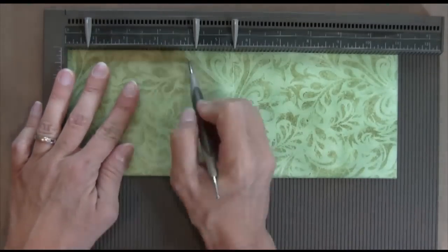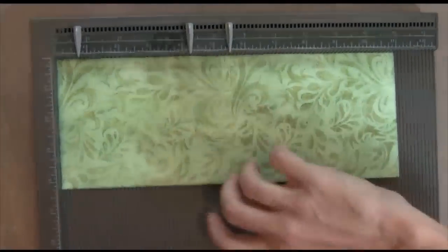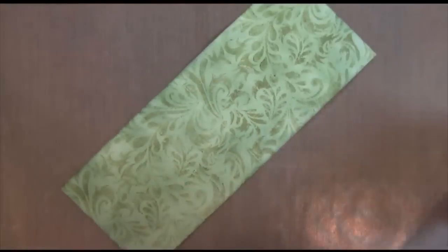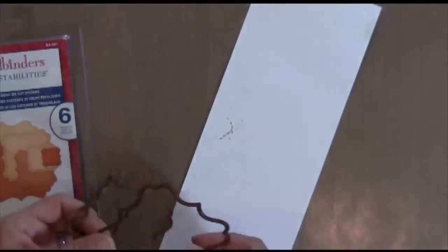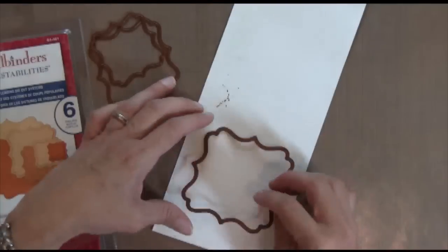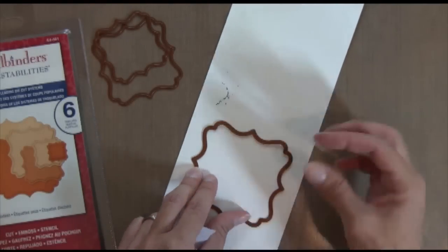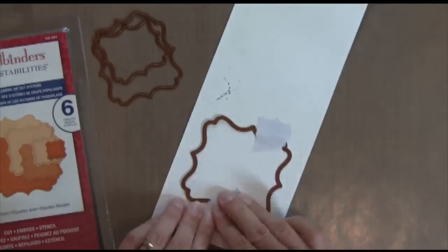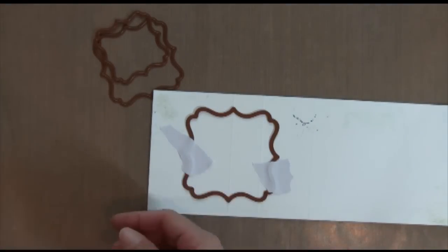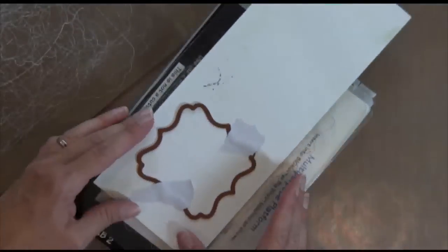Alright, so now I've got my scoreboard, and I'm going to score it at 2 3⁄4 and 3 3⁄4, and I'm going to take three different layers of these Spellbinder dies, I'm going to flip it over, and I'm going to center it on that 2 3⁄4 inch mark, and then I'm going to put some Eclipse masking tape there to hold it down.